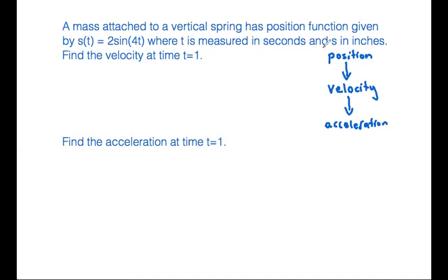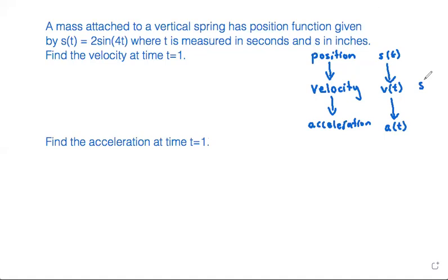Usually position is denoted as s(t). When you take the derivative of that, it's v(t) to represent velocity. And the derivative of that is a(t) to represent acceleration. Another way to write that would be s'(t) for the derivative of position, or s''(t) for the second derivative.